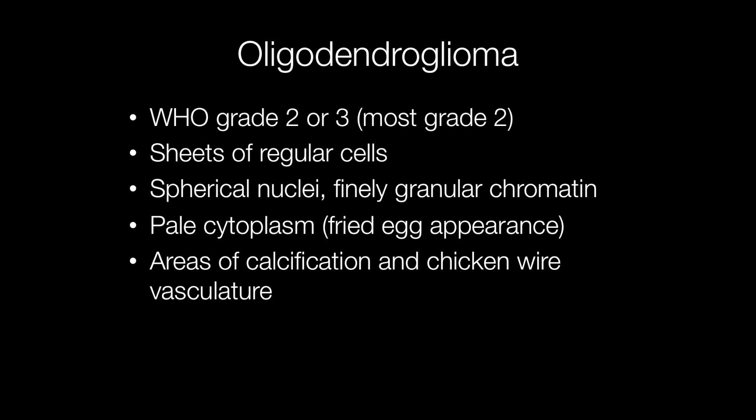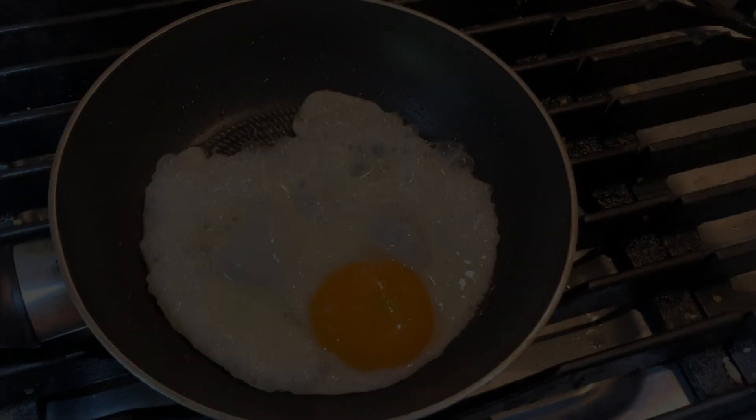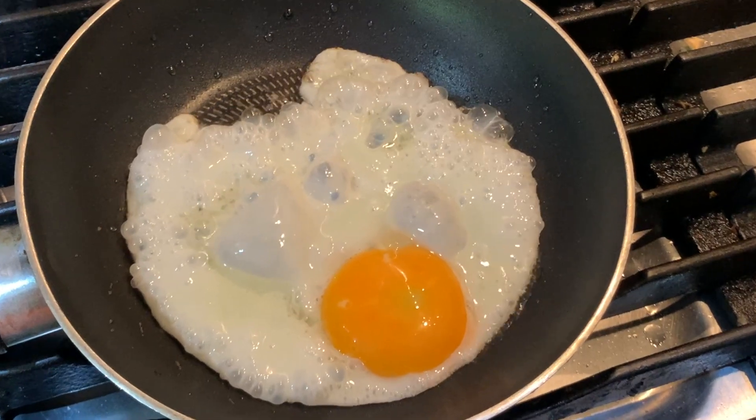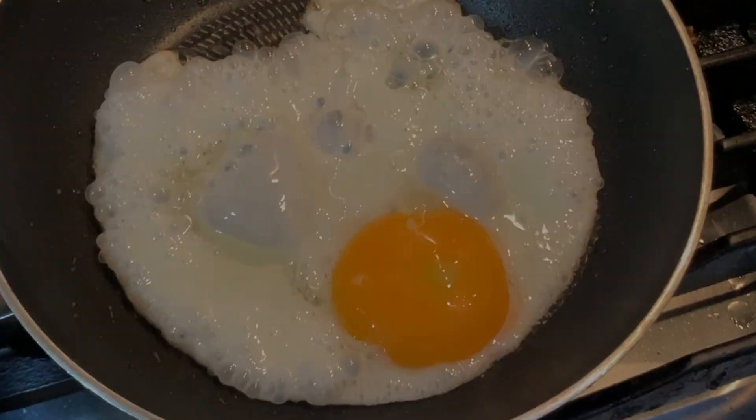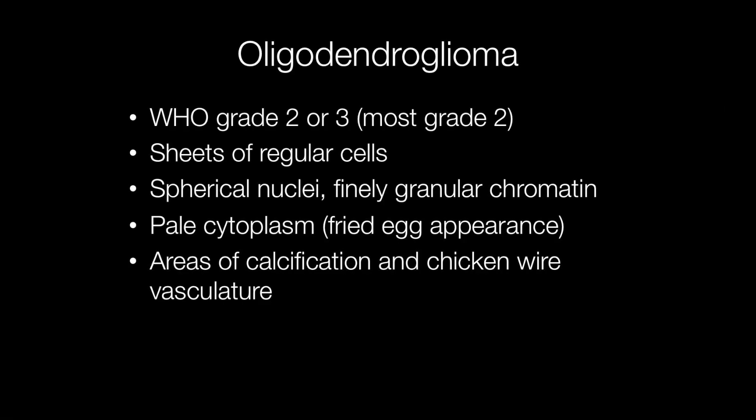Most oligodendrogliomas are WHO grade 2, and the grade 2 tumours are composed of sheets of regular cells with spherical nuclei with finely granular chromatin and infrequent mitotic figures. The cytoplasm is pale, resulting in a fried egg appearance. There may be areas of microcalcification, and the vasculature may have a chicken wire appearance.